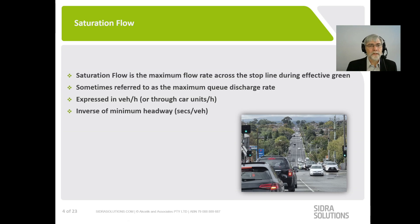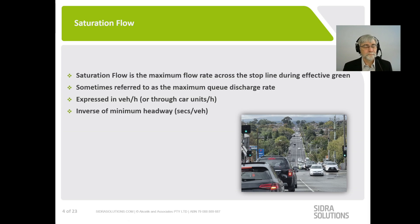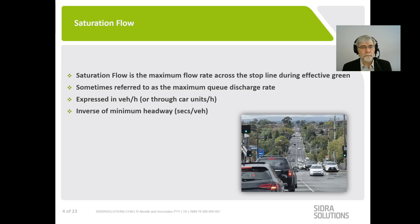Saturation flow is defined as the maximum flow rate across the stop line during the effective green time. Sometimes it's referred to as the maximum queue discharge rate. It's expressed in vehicles per hour, or the basic saturation flow is expressed in through car units per hour. It's the inverse of the minimum headway. As an example, if the minimum headway was 2 seconds per vehicle, the equivalent saturation flow would be 1800 vehicles per hour.